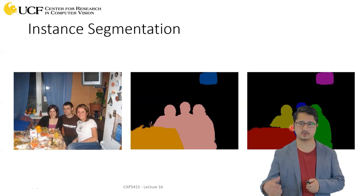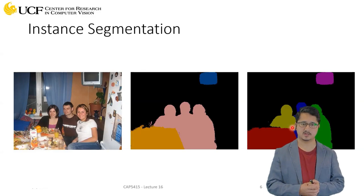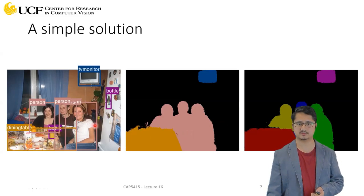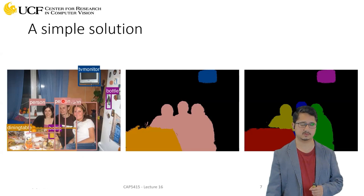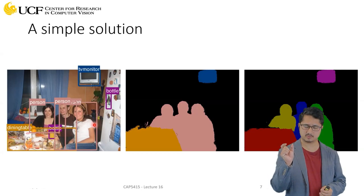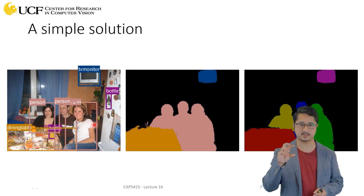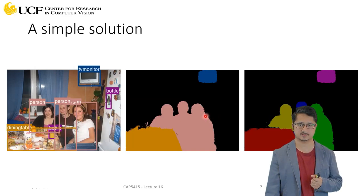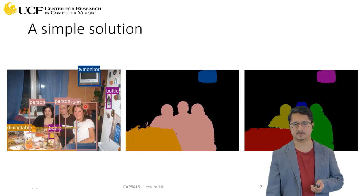One simple way to solve instance segmentation is to take the image and just do object detection. Object detection gives you bounding boxes around each object instance — it tells you how many people are present, gives you the TV monitor, and other objects. Since the bounding box surrounds each individual instance separately, you have a rough idea of which pixels belong to which instance, and can use this to separate different instances of the same category.